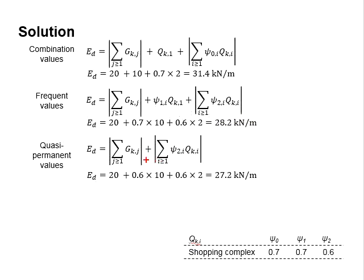As for the quasi-permanent actions, a factor of 0.6 is to be applied to all the variable actions. This gives you 27.2 kN per meter.